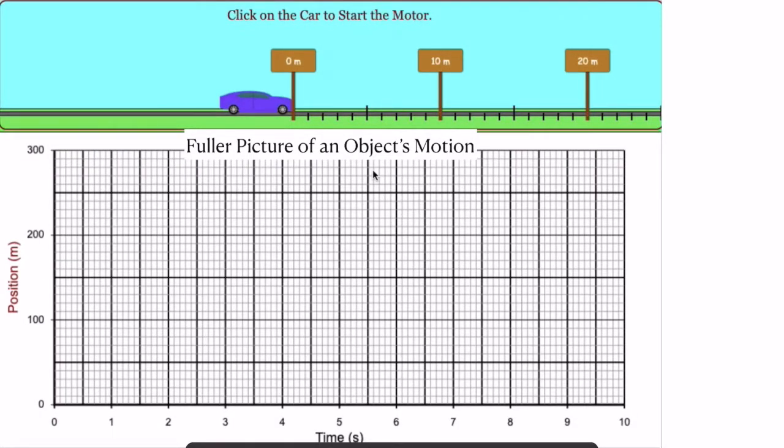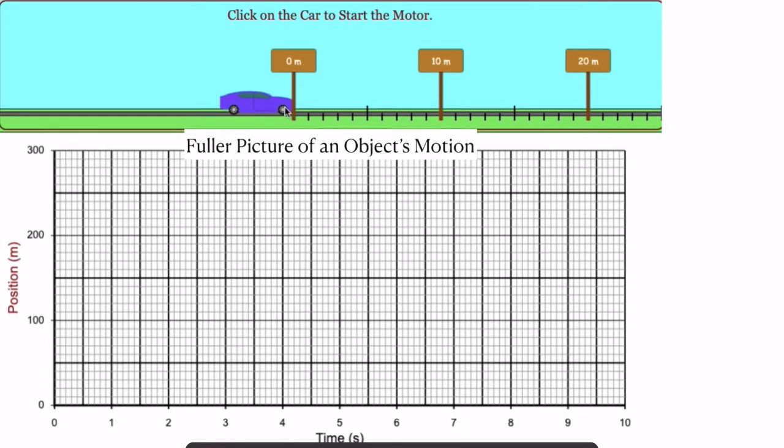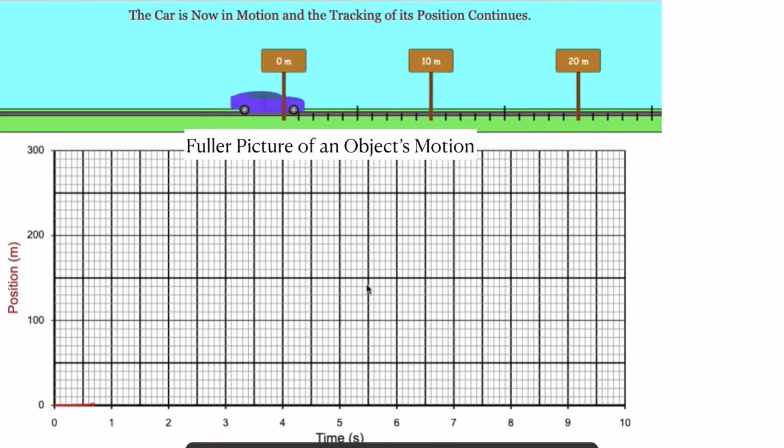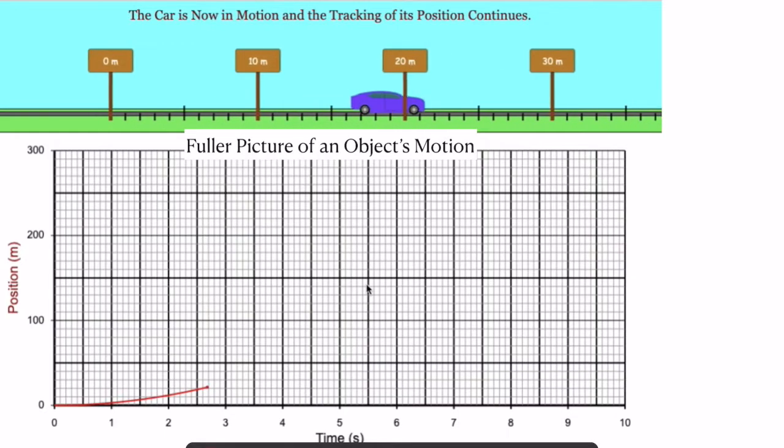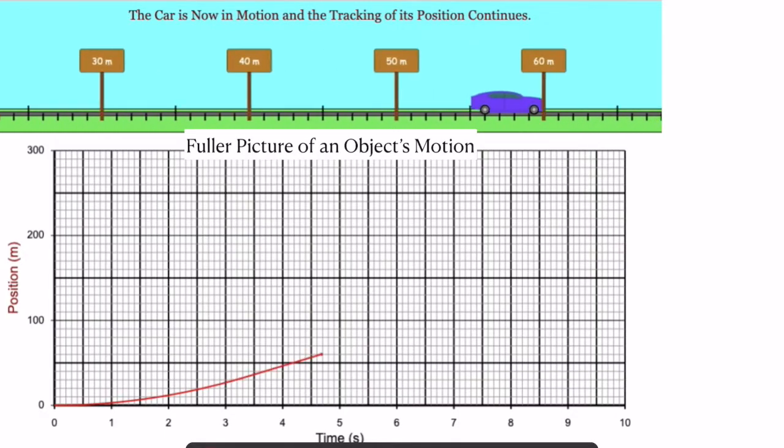In order to figure out the actual velocity at a given moment, we need to have a fuller picture of the object's motion. So rather than just doing an algebra equation, we should really graph the motion. So this car will represent Tori, and we're going to have it start at rest, just like Tori did, and then pick up speed for a while.